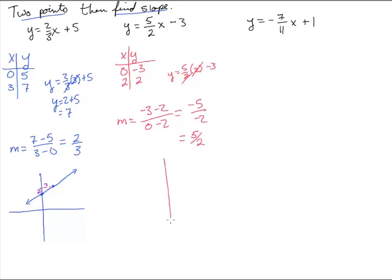Good deal. So if we graph this, we have zero, negative three — about right there. And then the next point, two, two: over one, two and up one, two. There's the line. And you can see again that the slope five-halves is illustrated: up five over two. And there we have it — there's the line.